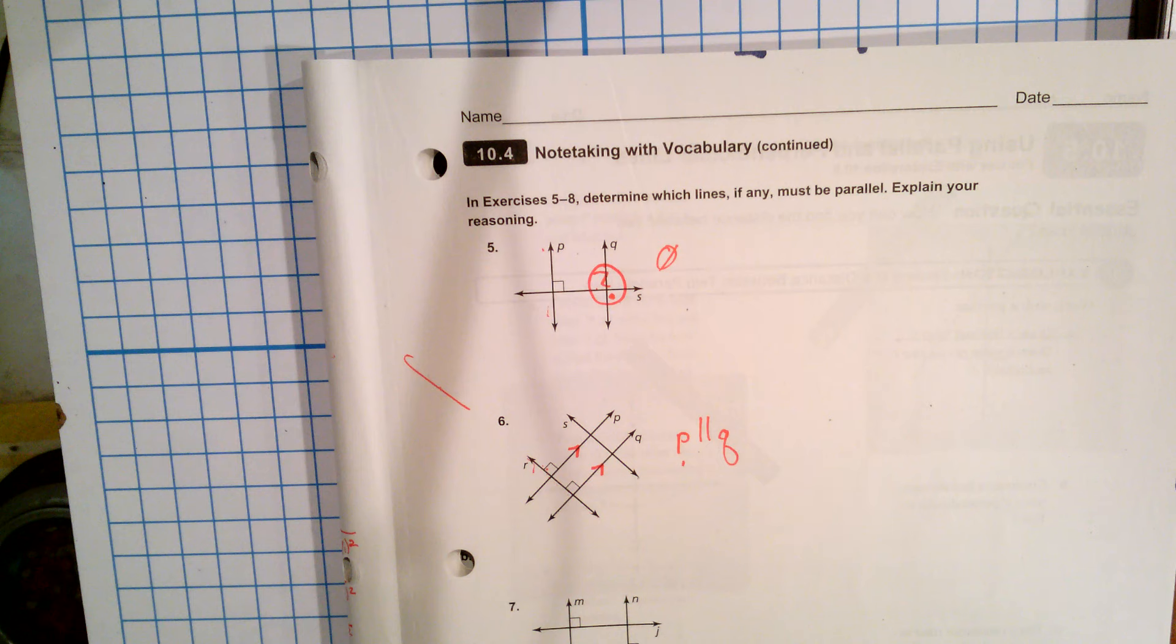Question six would be a good example. Here we've got two perpendicular angles on the transversal R, and what do I know if two perpendicular angles are there? Well, I know that line P would have to be parallel to line Q, and that's because of this. The line's perpendicular to a transversal theorem.